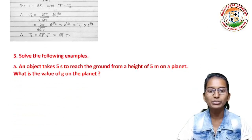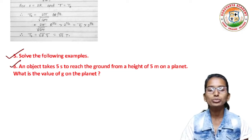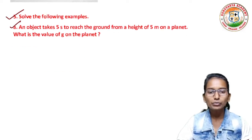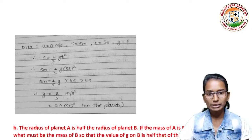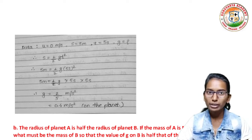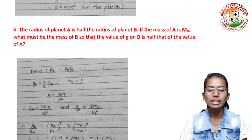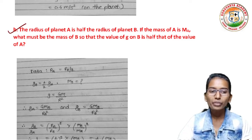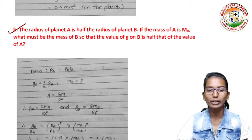You can try to solve the following examples. First: an object takes 5 seconds to reach the ground from a height of 5 m on a planet — what is the value of g on the planet? The answer is 0.4 meter per second square. Second: the radius of planet A is half the radius of planet B; if the mass of A is Mₐ, what must be the mass of B so that the value of g on B is half that of A?